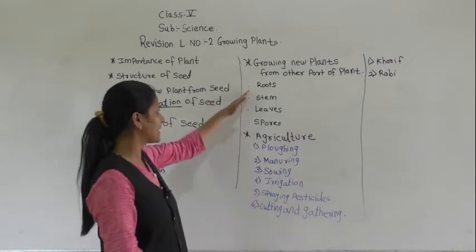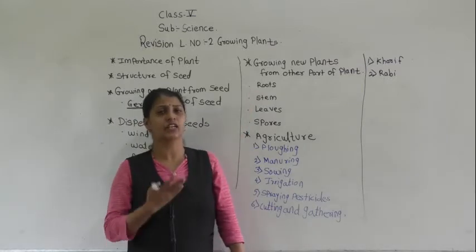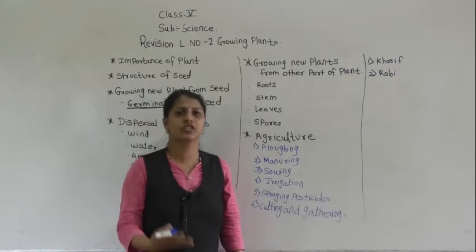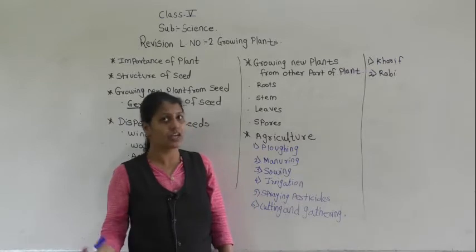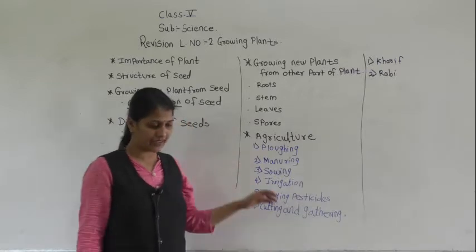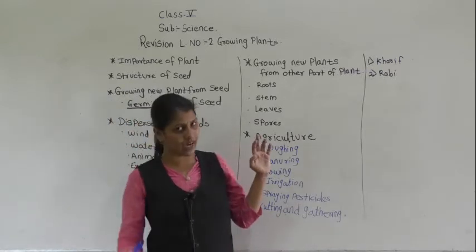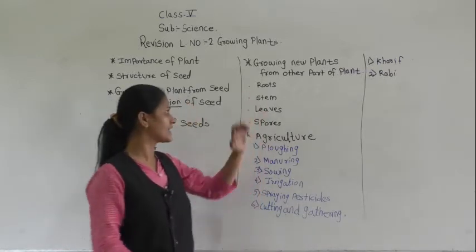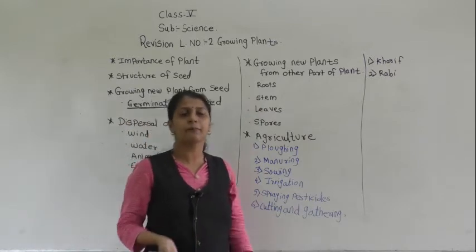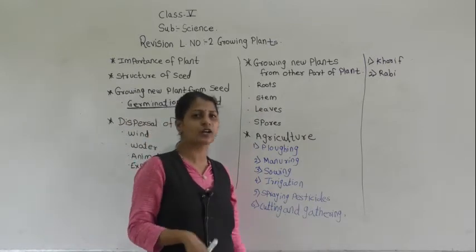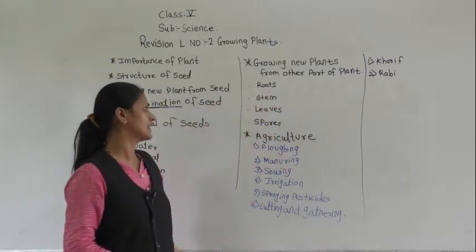By roots — can you give examples of new plants grown by roots? Yes: carrot, beetroot, and radish. These are examples of plants which are grown by roots.